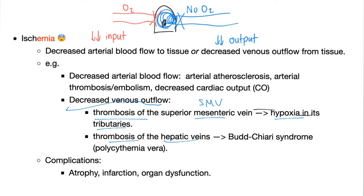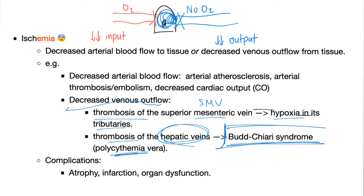Thrombosis in the hepatic vein — remember polycythemia vera — and this is called Budd-Chiari syndrome. Here is your liver and here are the hepatic veins exiting the liver. If you thrombose this, you are decreasing venous outflow from the liver, and the liver is going to suffer big time.